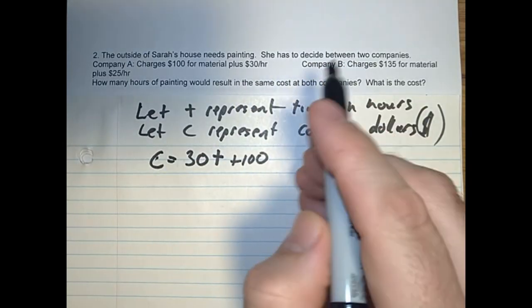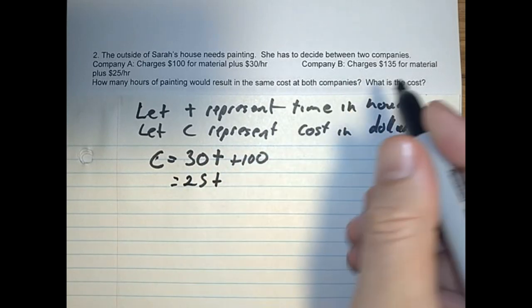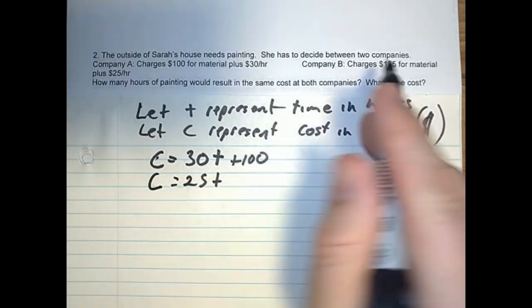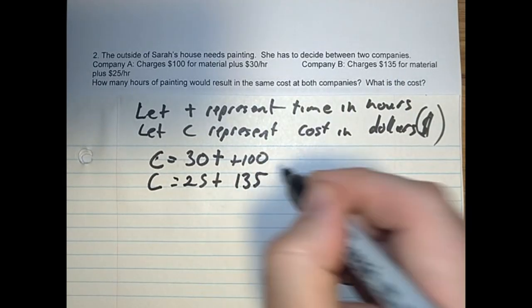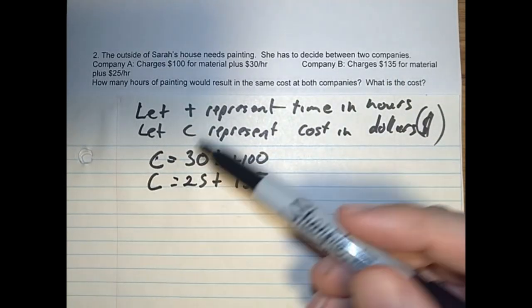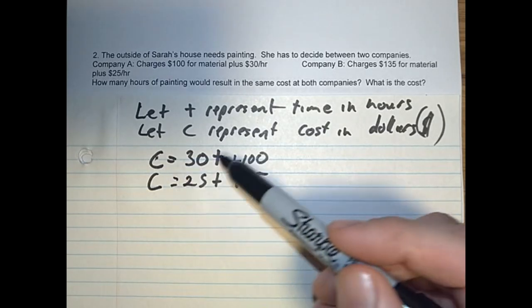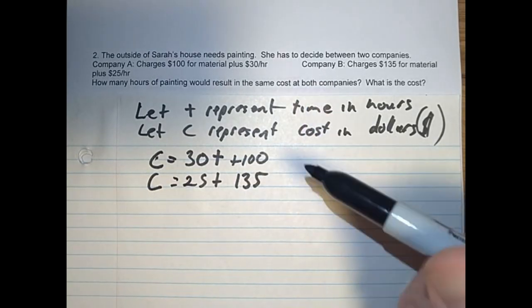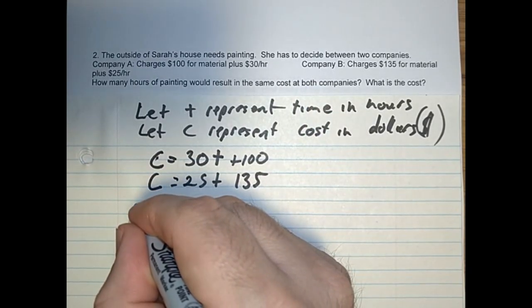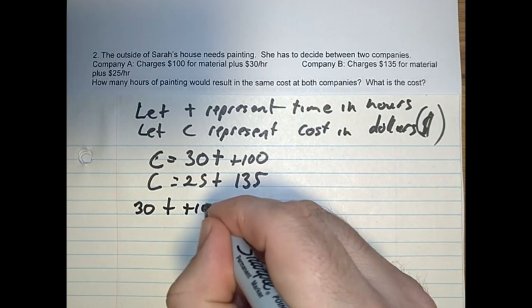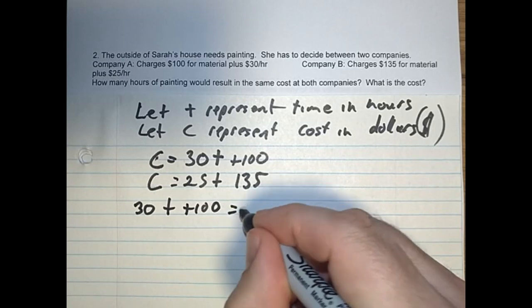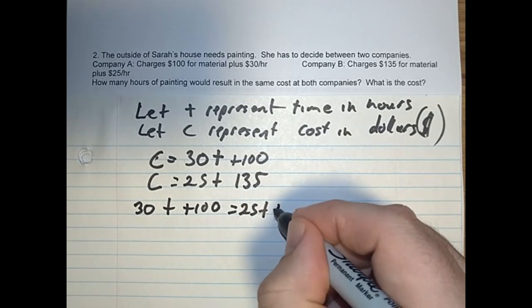Company B charges $25T. The cost is 25T plus $135. In this case, we're going to use substitution. We know the C's are the same, so these two expressions are equal. I'm going to write 30T plus $100 equals 25T plus $135.